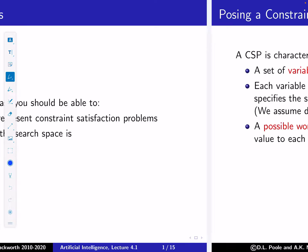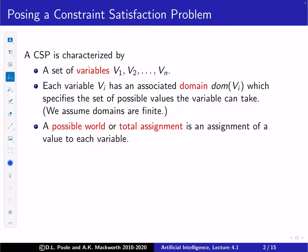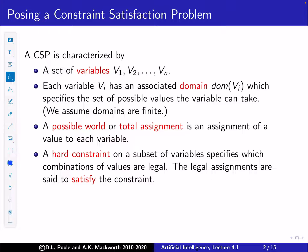We'd also count how big the search space is. A constraint satisfaction problem, or CSP, is characterized by a set of variables V1 to Vn. Each variable has an associated domain, written as dom(Vi), which specifies a set of possible values the variable can take. A possible world, or total assignment, is an assignment of one value to each variable.